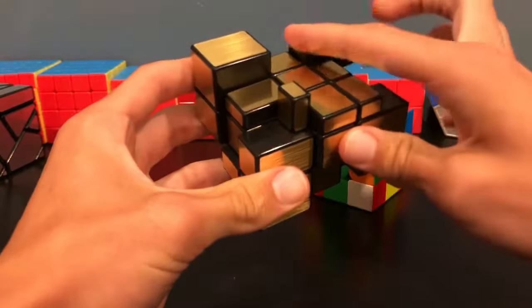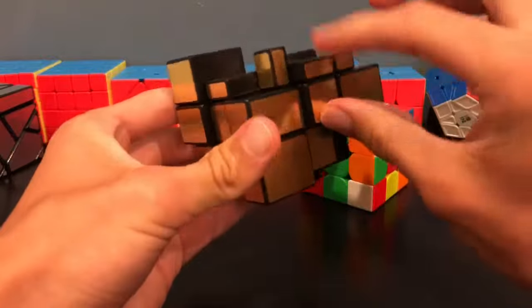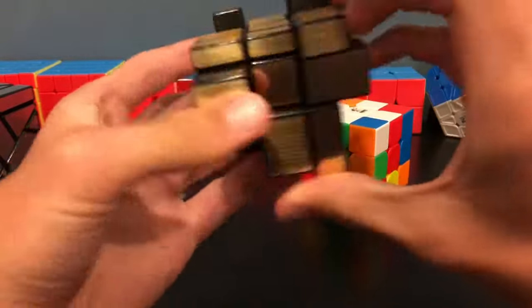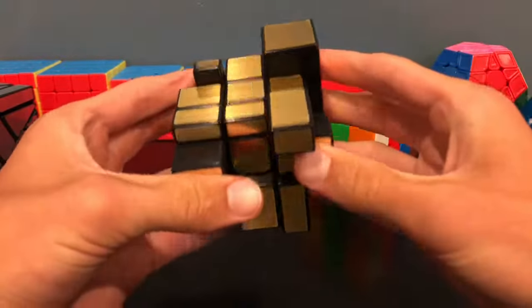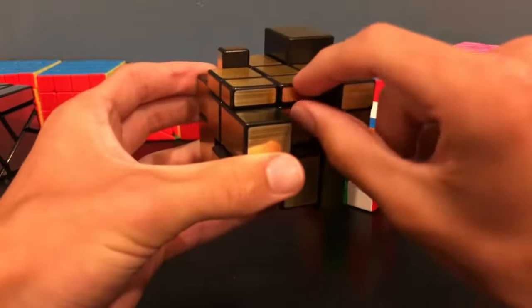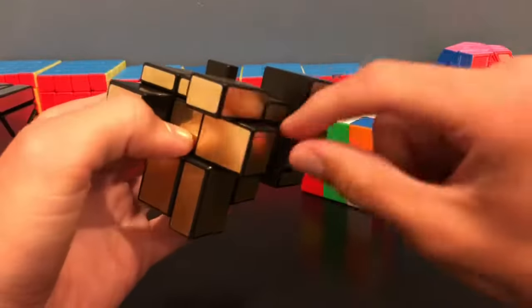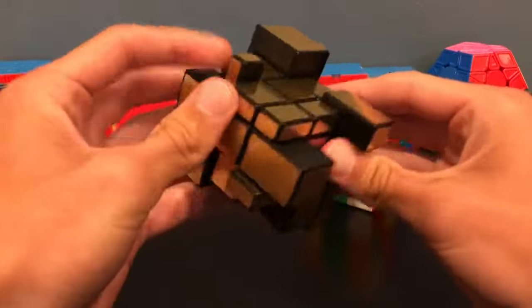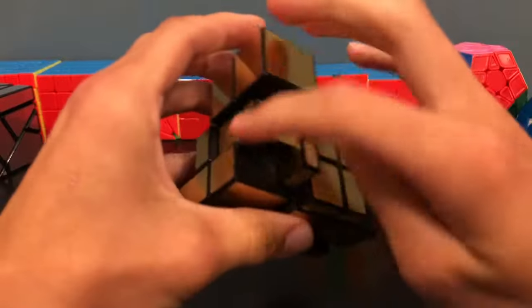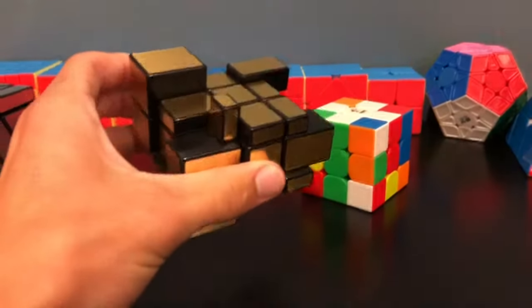So you'll know you've made it when you have a smooth cross that also fits in all the center pieces. It might take some guesswork at first, maybe putting an edge in, realizing it's wrong, then taking it out and moving around. But once you solve this a couple of times, you'll remember these four edges and which centers they go in.